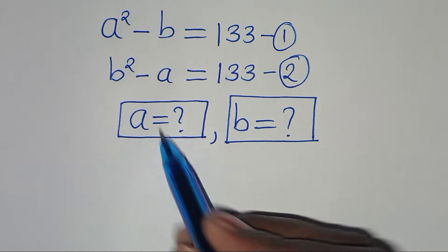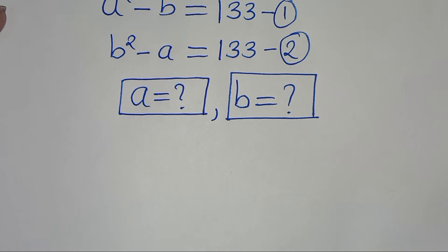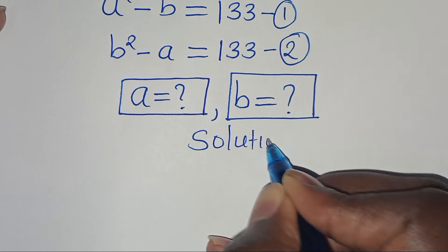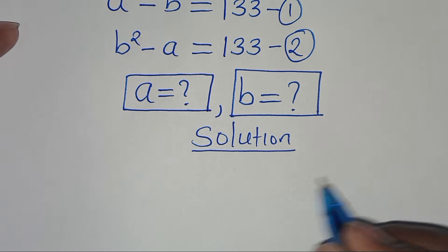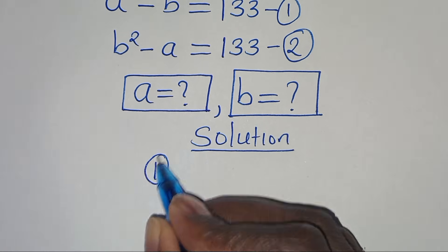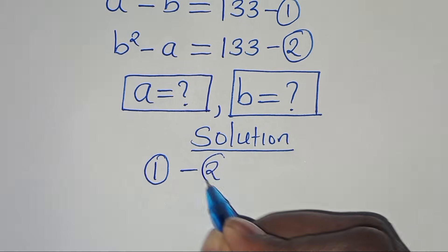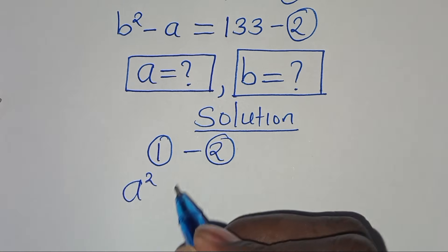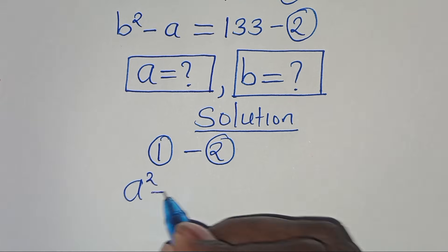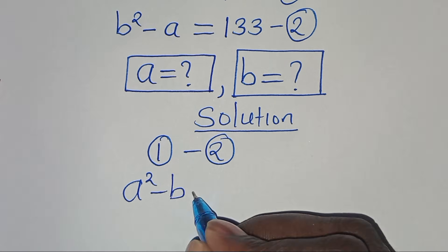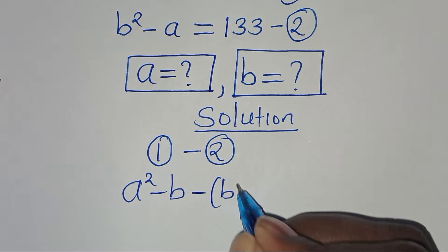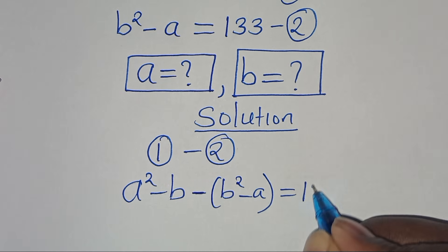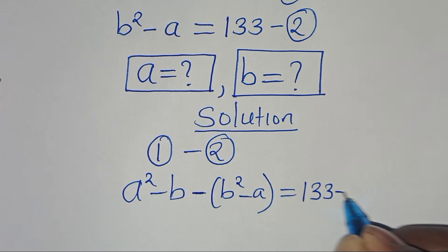So what is the value of a and what is the value of b? The first step is to subtract equation 1 from equation 2, so that we have a squared minus b, subtract b squared minus a, which is equal to 1/3 minus 1/3.